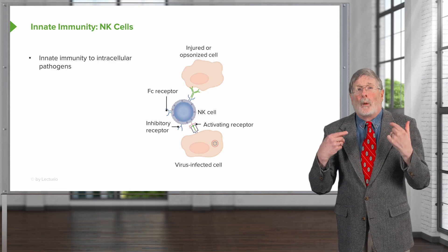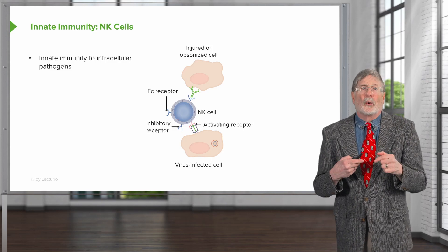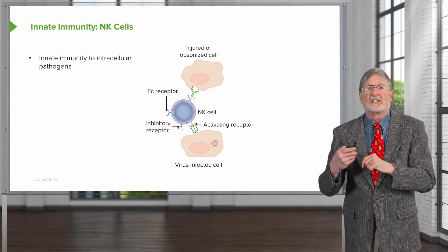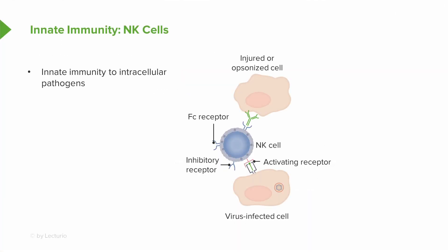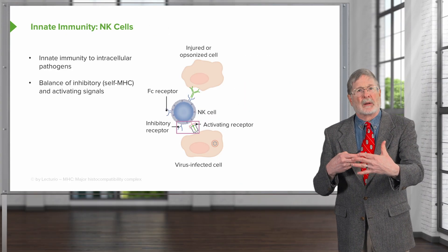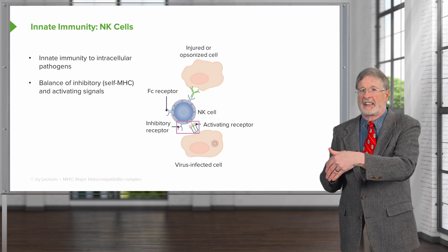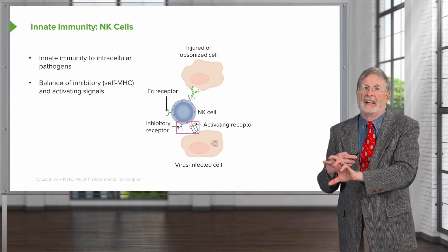So why do we have NK cells? They are important for immunity to intracellular pathogens. We have an example here of a virus-infected cell at the bottom that is no longer expressing inhibitory receptors. The loss of those inhibitory receptors because of the viral infection will cause the NK cell to sidle up next to that cell and kill it.